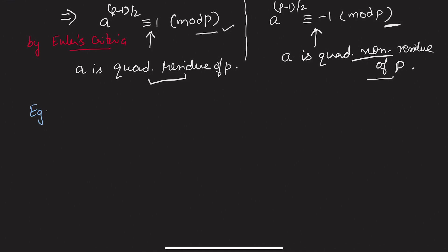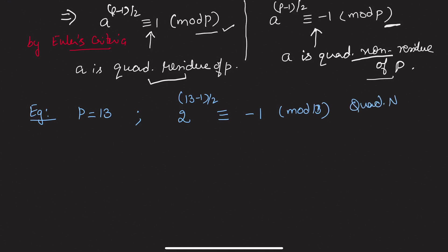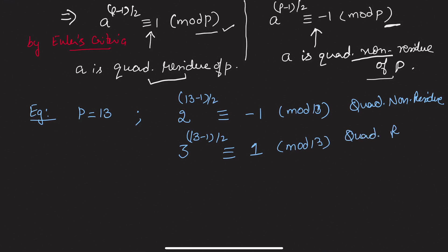We can verify this with our earlier example: with p = 13, we found 2^((13-1)/2) ≡ -1 (mod 13), so 2 is a quadratic non-residue. And 3^((13-1)/2) ≡ 1 (mod 13), so 3 is a quadratic residue of 13. This confirms the corollary.